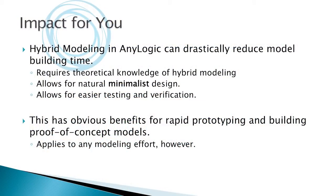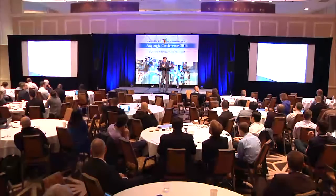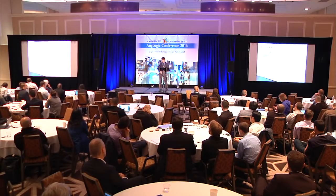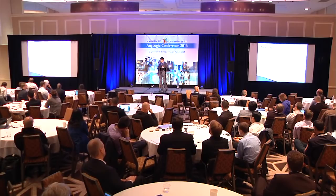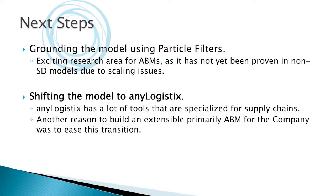The impact for practitioners: properly done hybrid modeling can drastically reduce the amount of time needed to build a model. While you need some theoretical knowledge of multi-method modeling, it allows for very natural design. We actually had far fewer objects in our model than the client's original, and produced it in a week — versus far more time for the original. Agent classes also make testing and verification much easier, and this approach is excellent for rapid prototyping or proof of concept models.